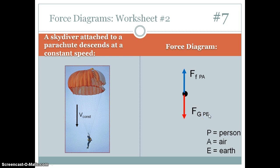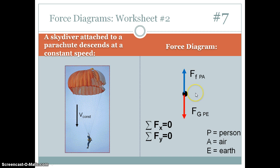When we add up the forces in the horizontal and vertical directions: the sum of the forces in the x direction is zero because there are no horizontal forces. In the y direction, the sum of the forces is also zero because the parachutist is moving at constant velocity.